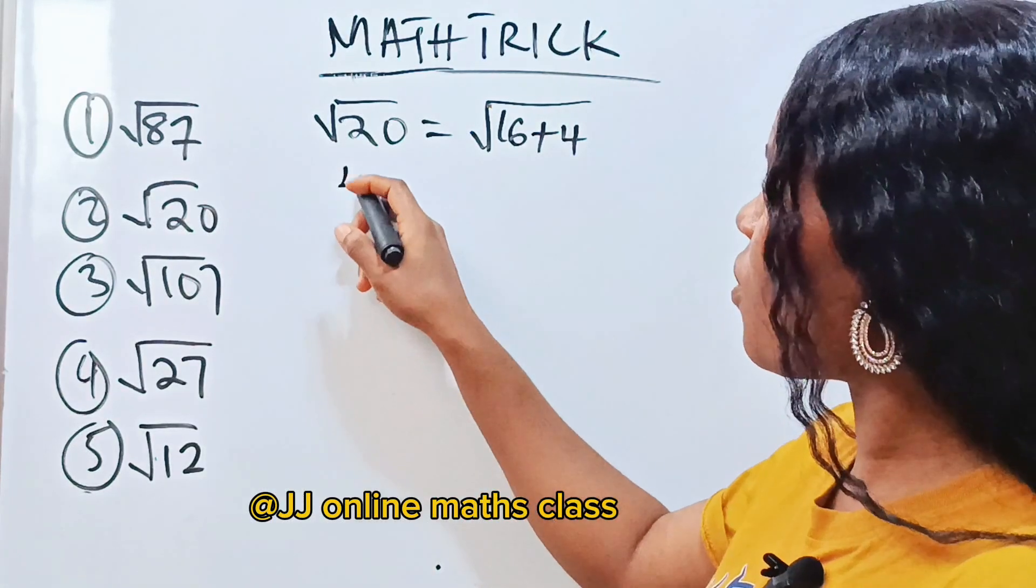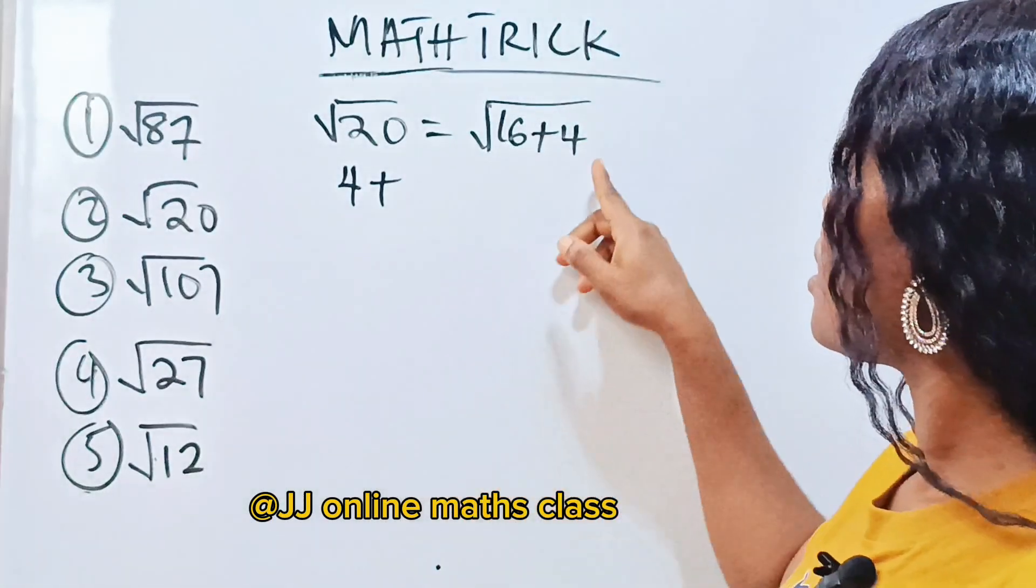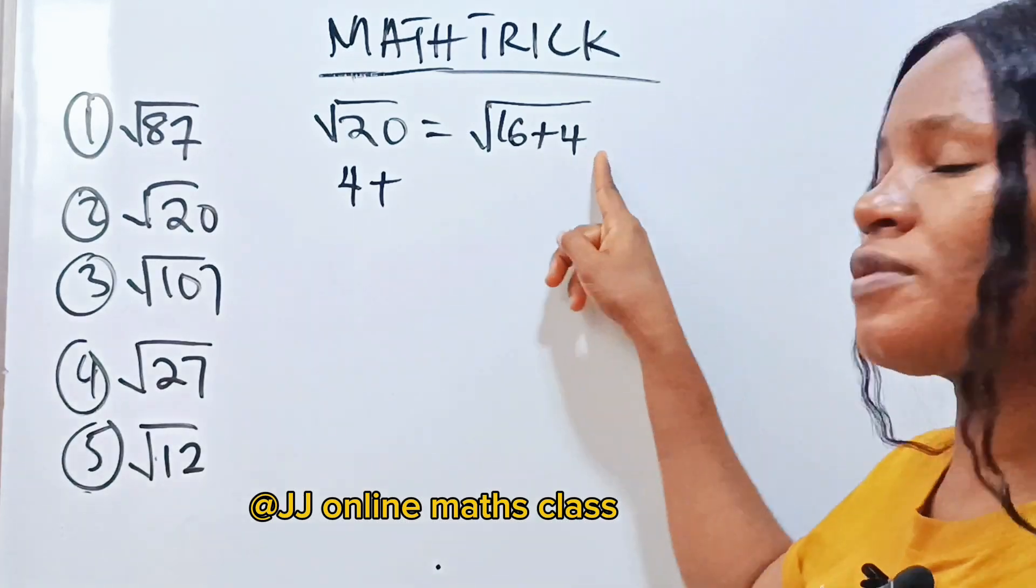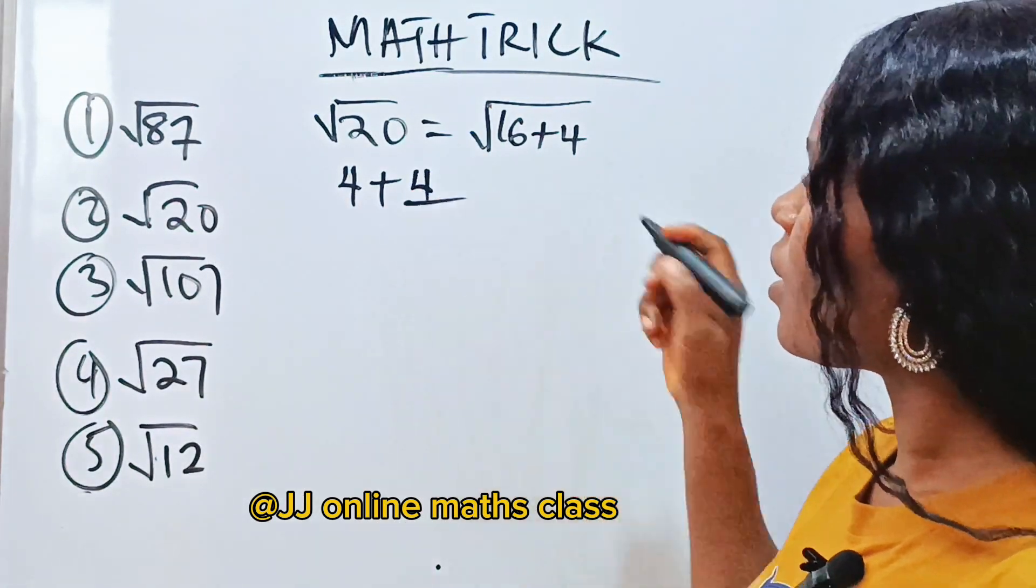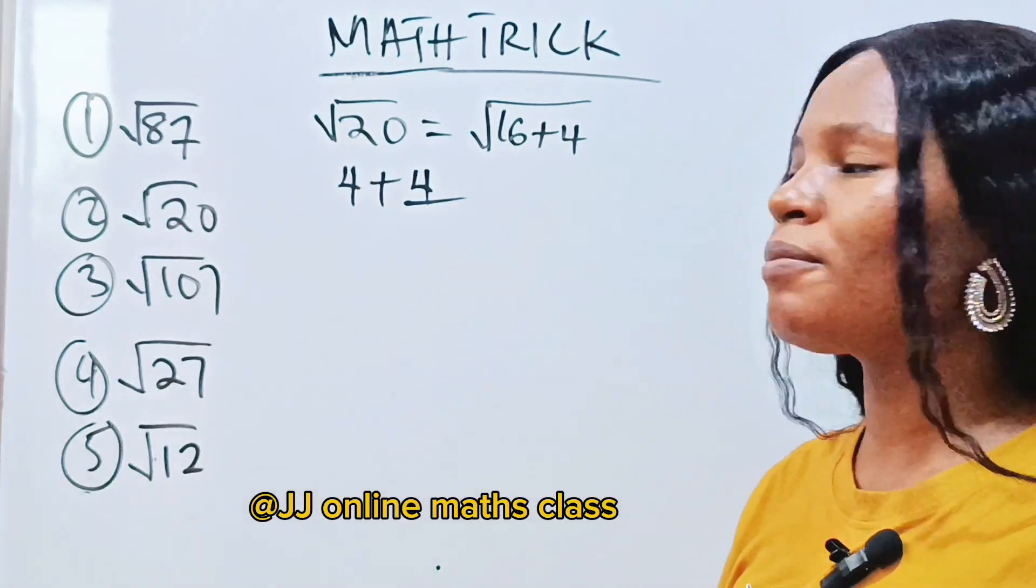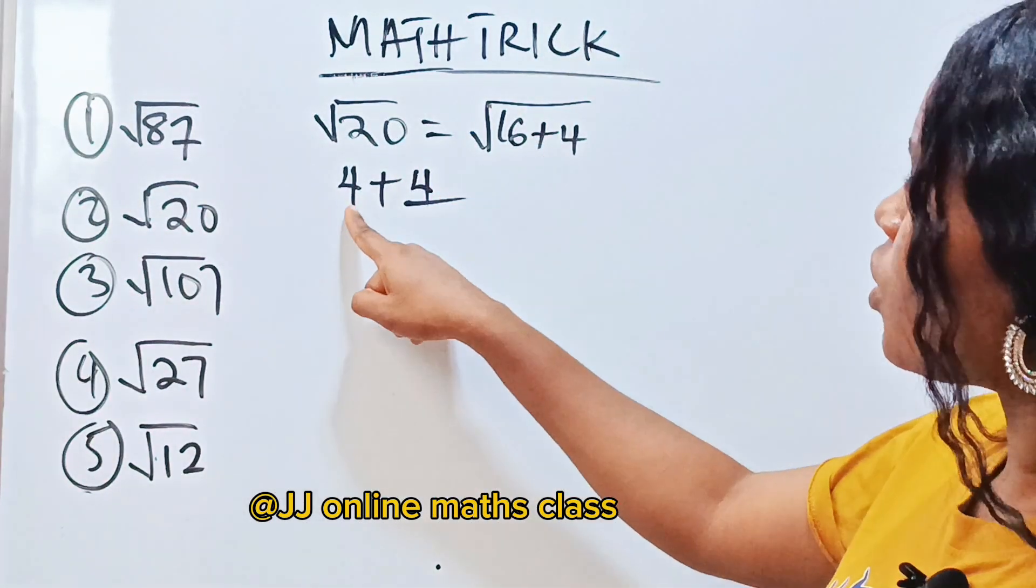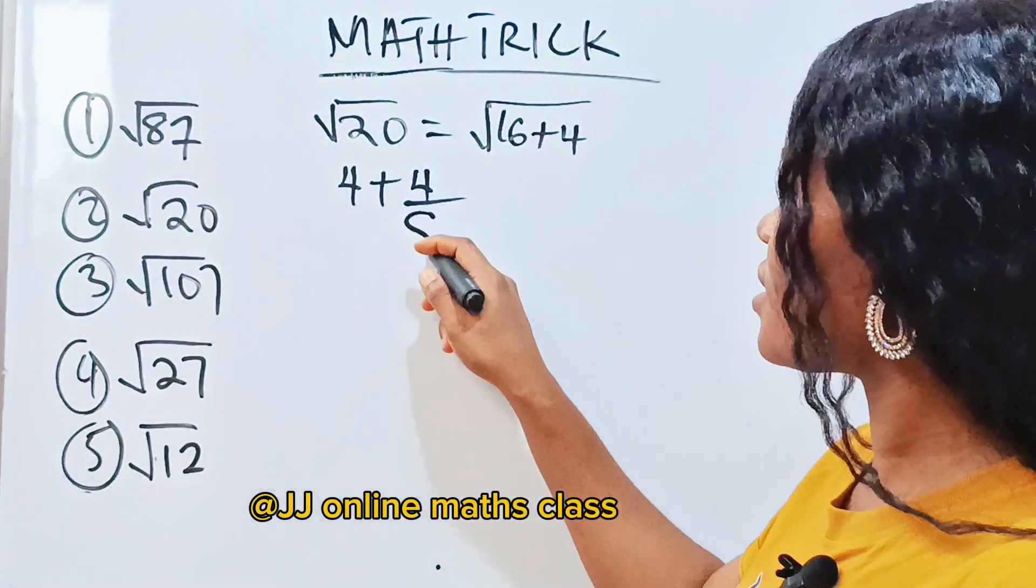So we are going to write 4 plus... Now this 4 we are looking at, we are going to repeat it. Divided by what is double of 4? Double of 4 is 8. Then we divide.